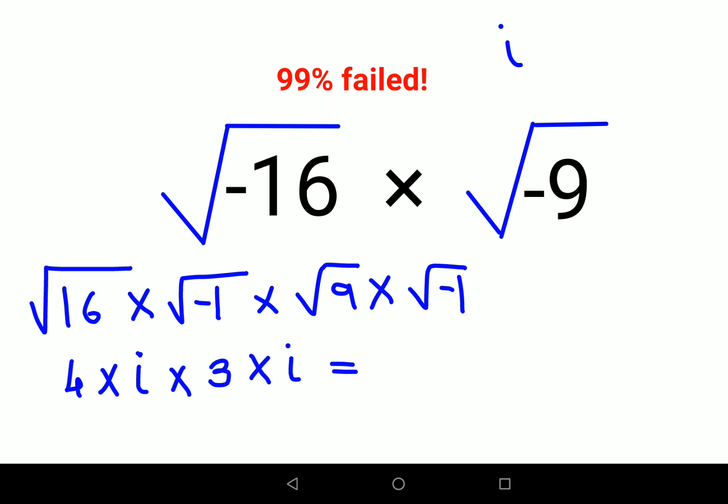So basically this comes out to be 4i × 3i = 12i².